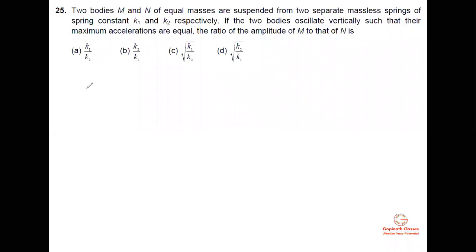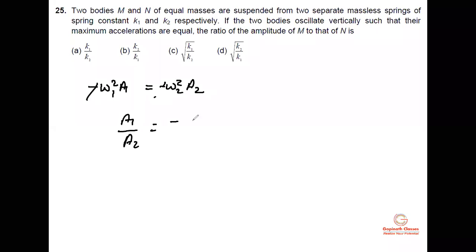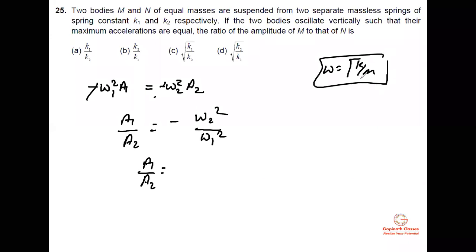The maximum acceleration: ω1²·a1 equals ω2²·a2. So the ratio a1/a2 equals ω2²/ω1². Since ω² = k/m and masses are equal, a1/a2 equals k2/k1. So this is all about the ratio of amplitudes.